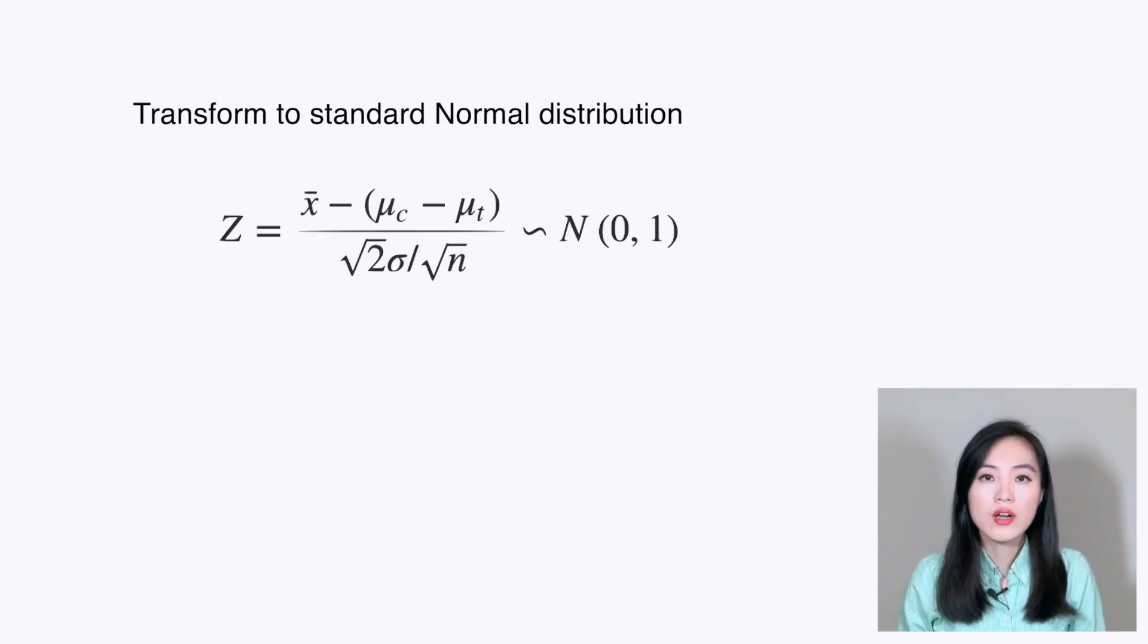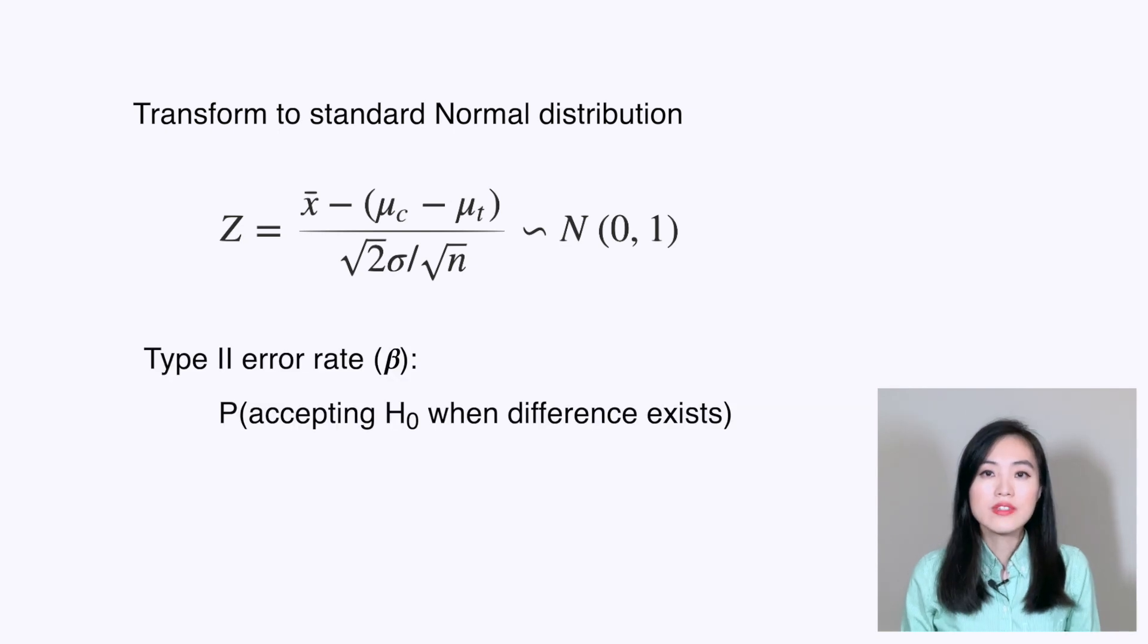We can transform x̄ to an approximately standard normal variable Z. Based on the definition of Type II error, the probability of accepting the null hypothesis when there is a significant difference between μ_c and μ_t, we can write its formula.